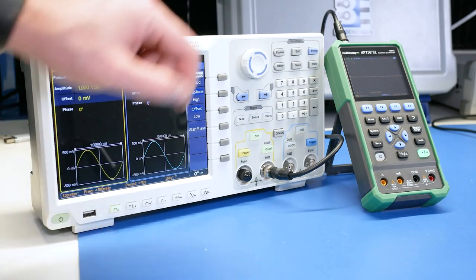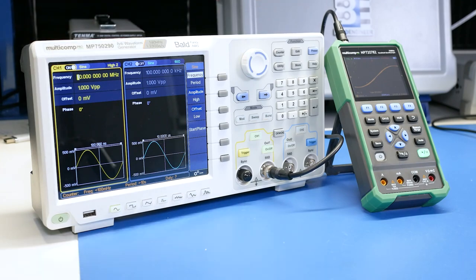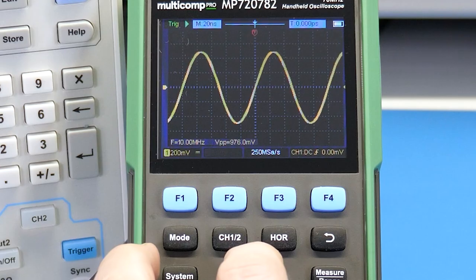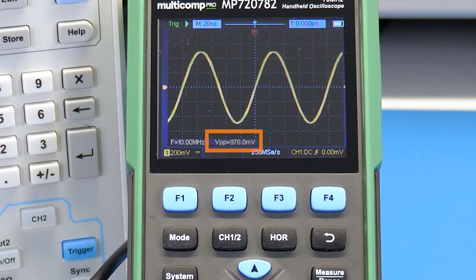Now the AWG is set to a 10 MHz sine wave with 1 volt peak to peak. On the scope DMM, it measures 976 mV or 2-3% from the expected.